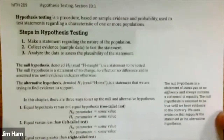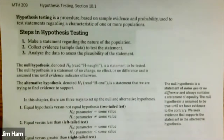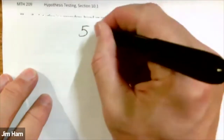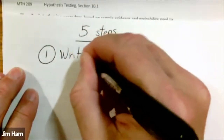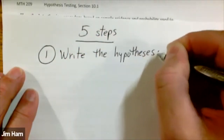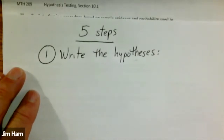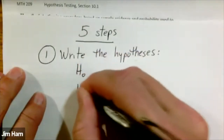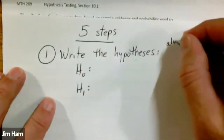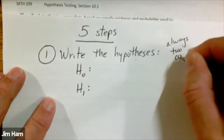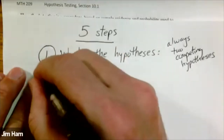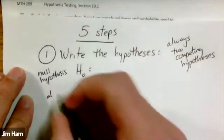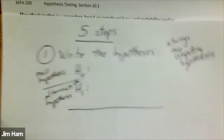Here are the notes in e-learning for section 10.1. Step number one is to write the hypotheses. Every hypothesis test has two hypotheses — H sub 0 and H sub 1 — always two. These are competing hypotheses; they both can't be true at the same time. H sub 0 is the null hypothesis, and H1 is called the alternative. We're going to write the hypotheses.